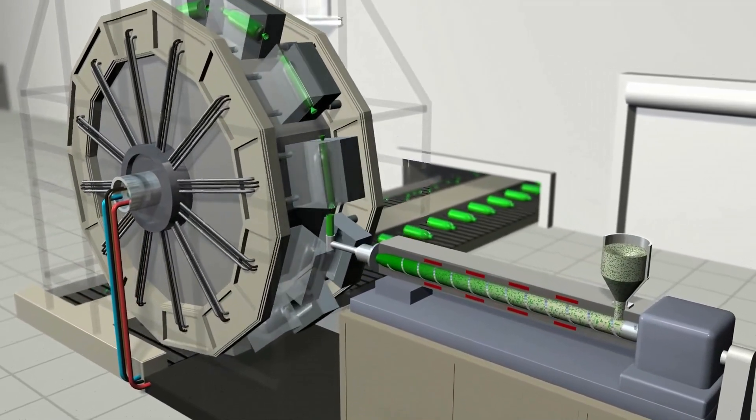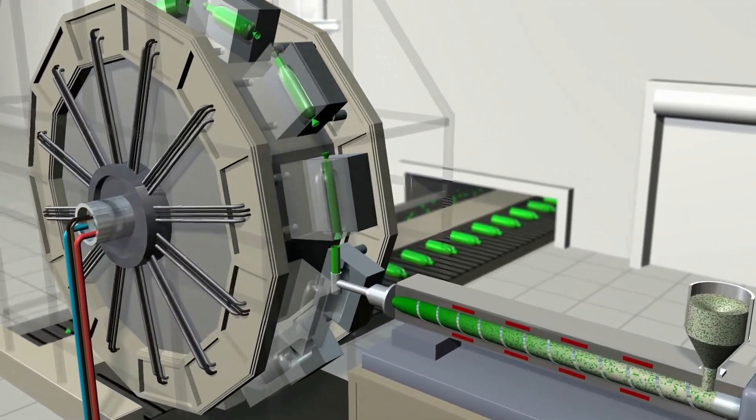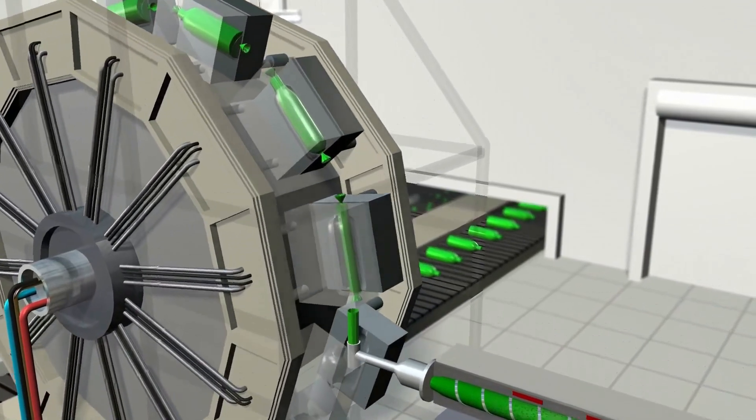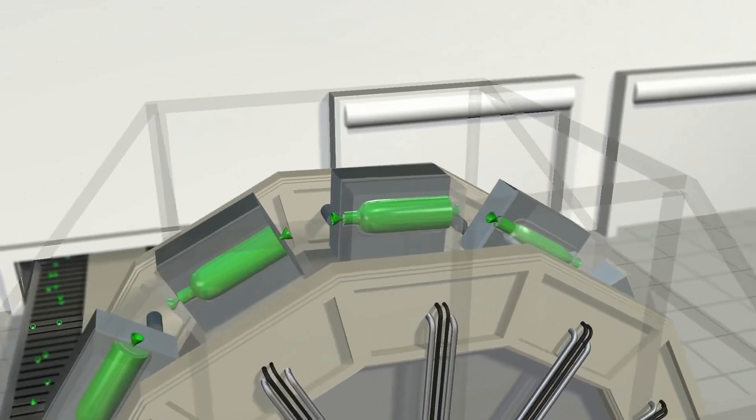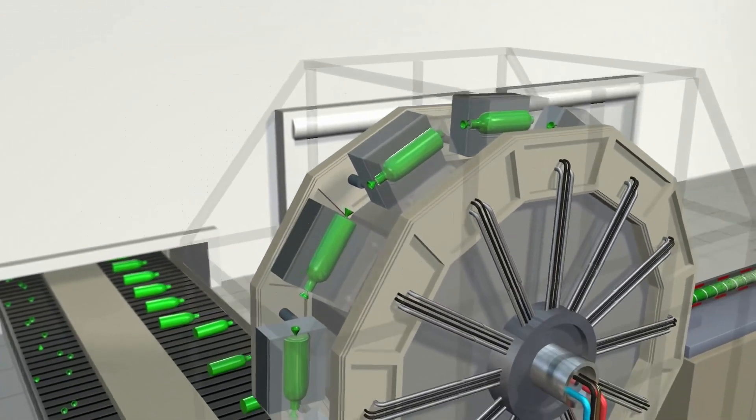Blow the parison into a bottle, allow it to cool, and then place it onto a conveyor, producing a continuous stream of finished bottles originating from that continuous flow of plastic from the extruder.